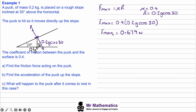For part b, find the acceleration of the puck up the slope. The maximum friction acts down the slope, and as the puck travels up after being hit, the friction will slow it down. The weight also has a component acting parallel and down the slope, equal to 0.2g sin30. If you're unsure how to work out these two forces, check out the videos on my website.